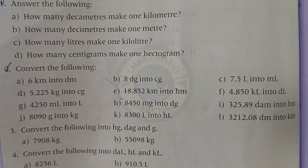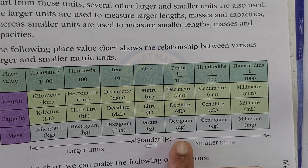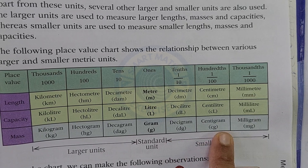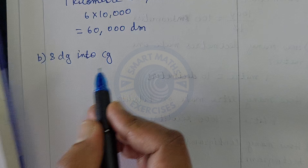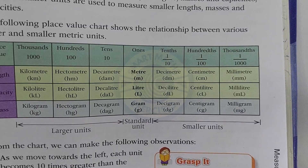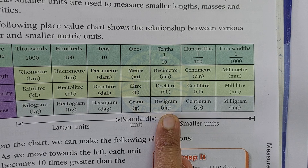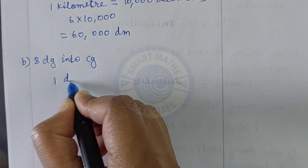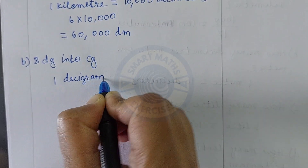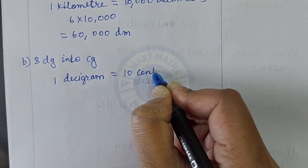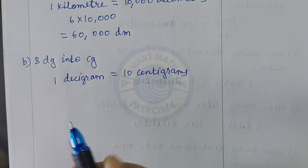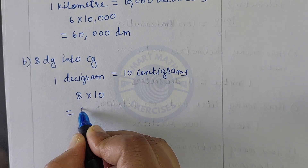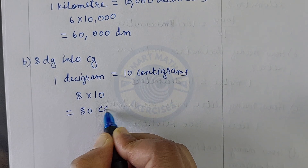Convert 8 dg into cg. We are converting from decigram to centigram, which is from a higher unit to a smaller unit. From decigram to centigram, multiply by 10. So 1 decigram equals 10 centigrams. Multiply 8 by 10: the answer is 80 centigrams (cg).